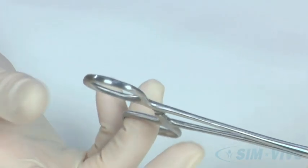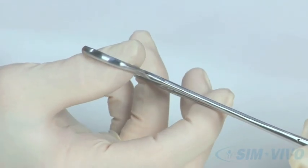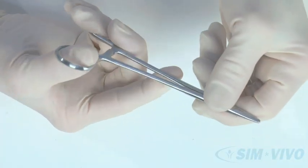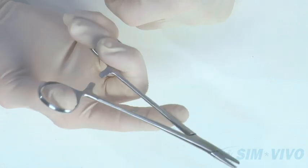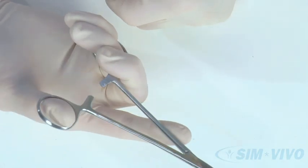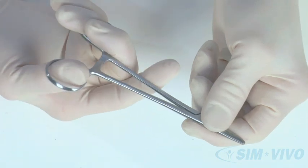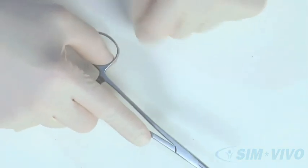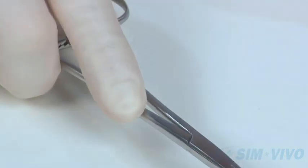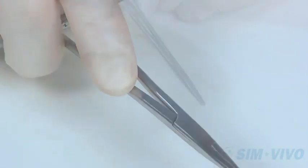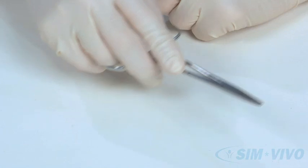This instrument should be held by placing your thumb and ring finger into the rings on the handle. Your digits should not be inserted beyond the distal interphalangeal joint, which will allow you to disengage easily if necessary. The index finger can be placed close to the joint of the needle driver, which allows better control of the tip. When held in this fashion, there are unlimited motions of the tip that are possible.